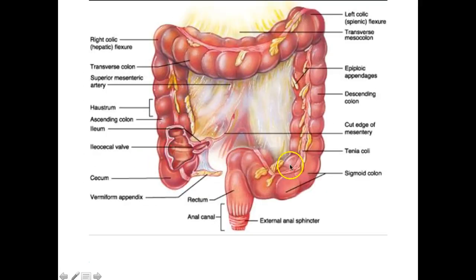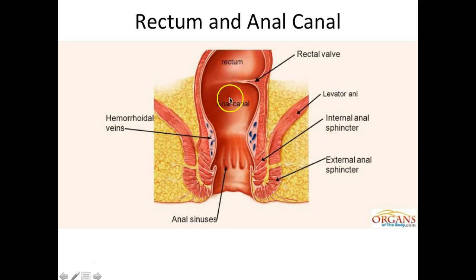Appendages are these little structures of fat hanging from the large intestine whose function is really unknown. In the last part we have the rectum and then the anal canal. The anal canal has two sphincters around it: the internal anal sphincter, which is involuntary, and the external anal sphincter, which is voluntary.